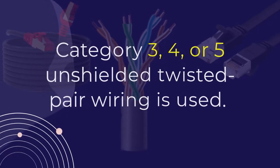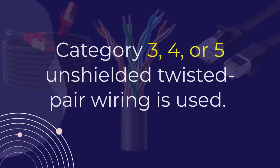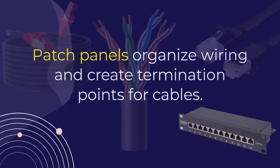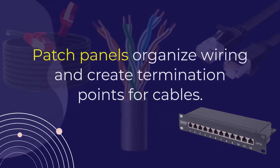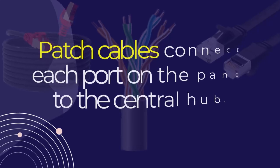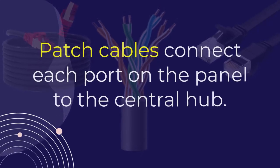Category 3, 4, or 5 unshielded twisted pair wiring is used. Patch panels organize wiring and create termination points for cables. Patch cables connect each port on the panel to the central hub.